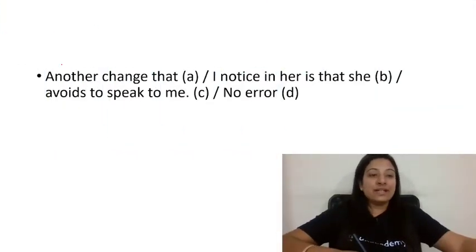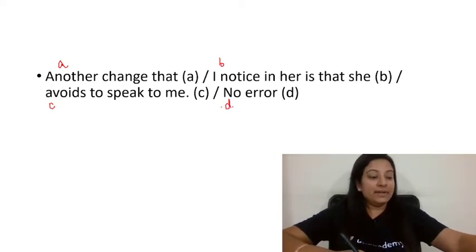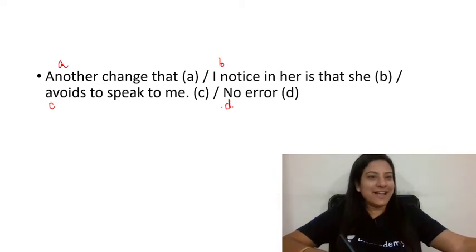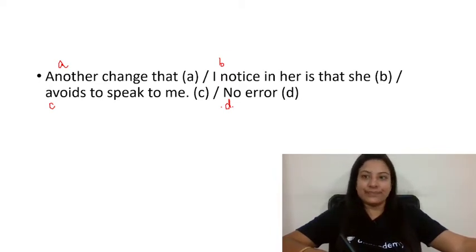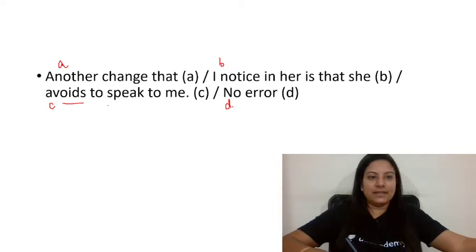So that's your first question. Whenever you have a question, you will be able to pause the video and attempt it, so that the video will not be longer. The sentence is: 'Another change that I noticed in her is that she avoids to speak to me.' Here we have our correct answer — it's option number C. There is a very basic thing in this.